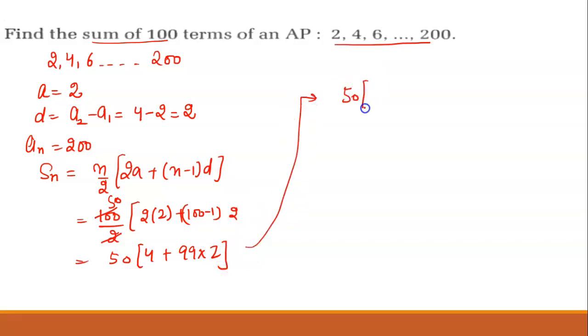We will get here 4 plus 99 into 2 is 198. So here is 198 plus 4 is 202, multiplied with 50.